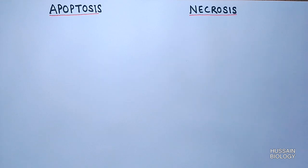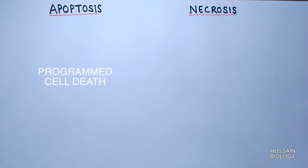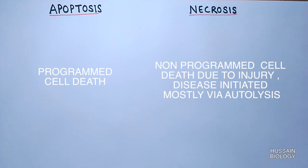First of all, we know the basic difference between these: apoptosis is programmed cell death, or we can say controlled death of a cell, while necrosis is not programmed — it is due to either disease, injury, or anything else, but not controlled.